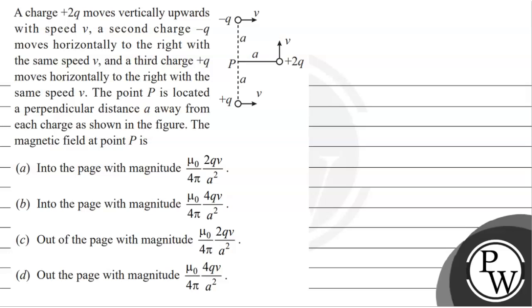Hello, let's read this question. The question says that a charge plus 2Q moves vertically upward with speed V. A second charge minus Q moves horizontally to the right with same speed V and a third charge plus Q moves horizontally to the right with the same speed V. The point P is located perpendicular distance A away from each charge as shown in the figure.